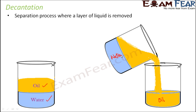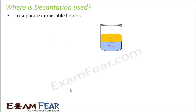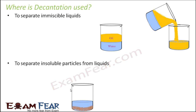This is only possible if the liquids are immiscible — meaning they do not mix with each other. If the liquids mix, you will not get distinct layers. That is one instance of decantation. The other instance is separating insoluble particles from fluids — for example, muddy water or water mixed with sand, where the heavier sand particles settle at the bottom through sedimentation.